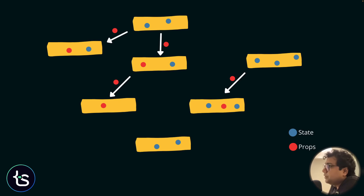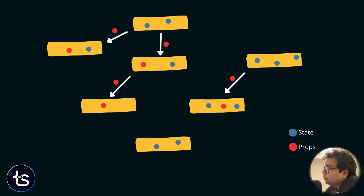Components talk to each other by passing information, so they use props. There is also another way using context to share information. Along with that, a component also has something very private to itself which we call state. The blue dots represent state and the orange/red dots represent the data — the props — that a component passes to another.